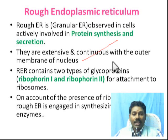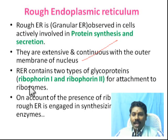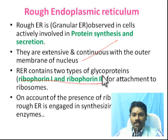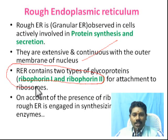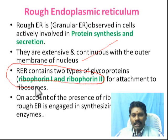How do ribosomes attach to the ER? There are proteins called riboforin proteins — riboforin 1 and riboforin 2 — both are involved in the attachment of ribosomes to the ER.